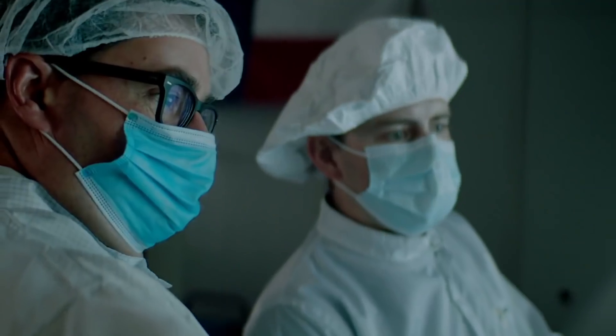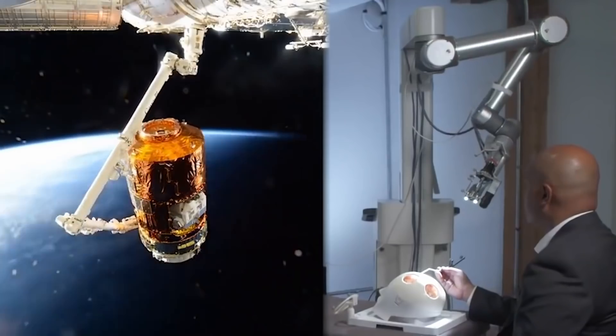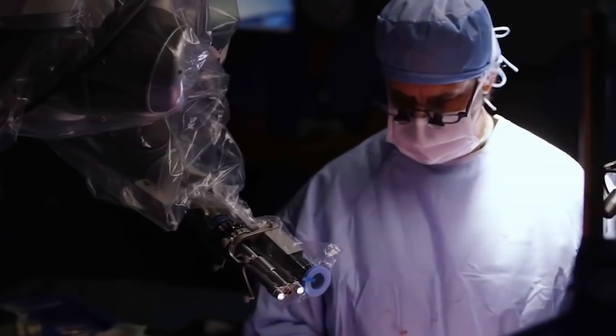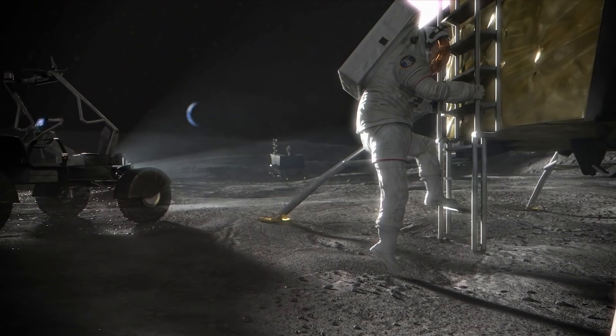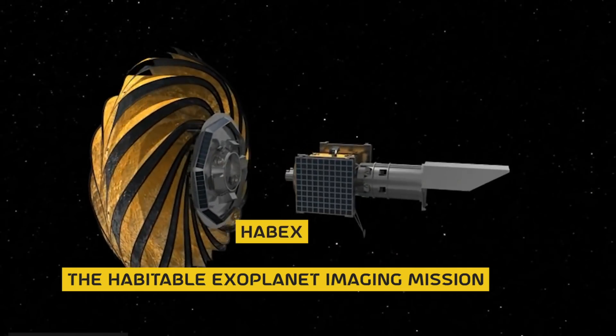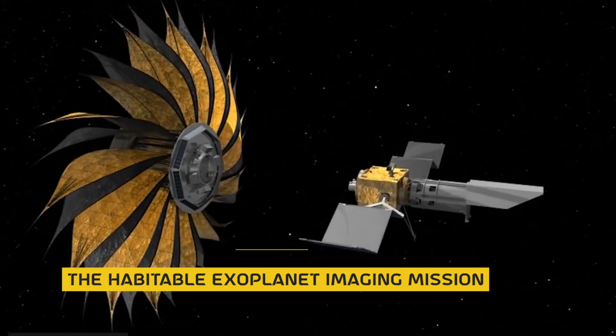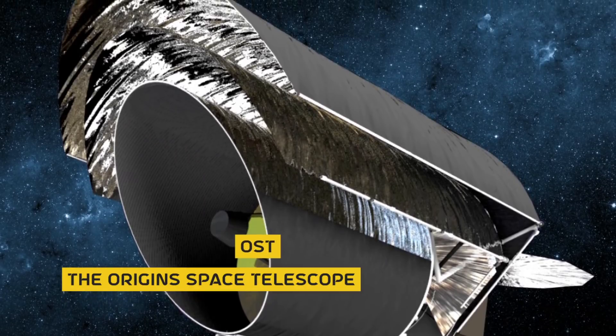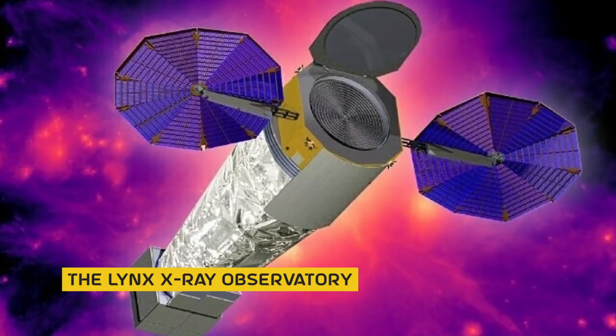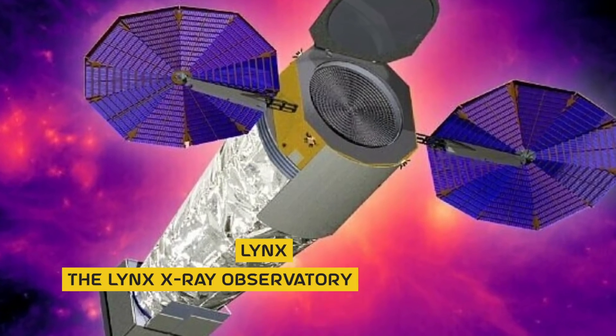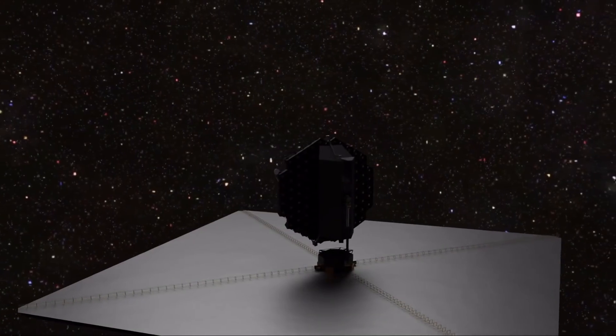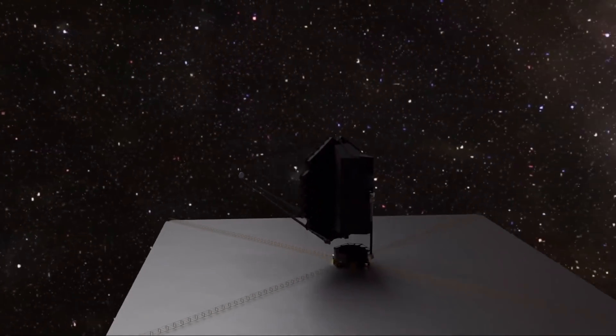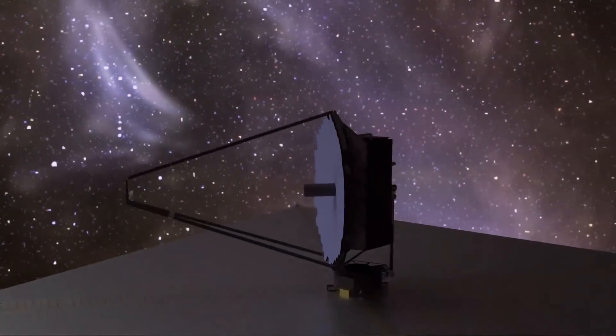Starting in 2016, NASA began considering four different telescope concepts for future large strategic science missions: The Habitable Exoplanet Imaging Mission, known as HABEX, the Origin Space Telescope known as OST, the LYNX X-ray Observatory, and last but not least, the Large Ultraviolet Optical Infrared Surveyor, known as the LUVOIR.